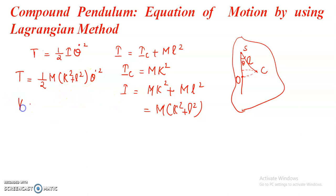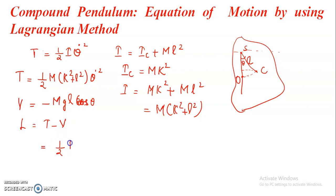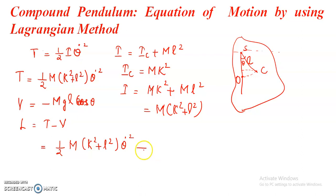Now, the potential energy V with respect to the horizontal plane through S — we are taking the point of suspension as our reference point. So the potential energy equals minus MgL cos theta. Therefore, the Lagrangian L equals T minus V equals half M(K² + L²) theta-dot squared minus MgL cos theta.